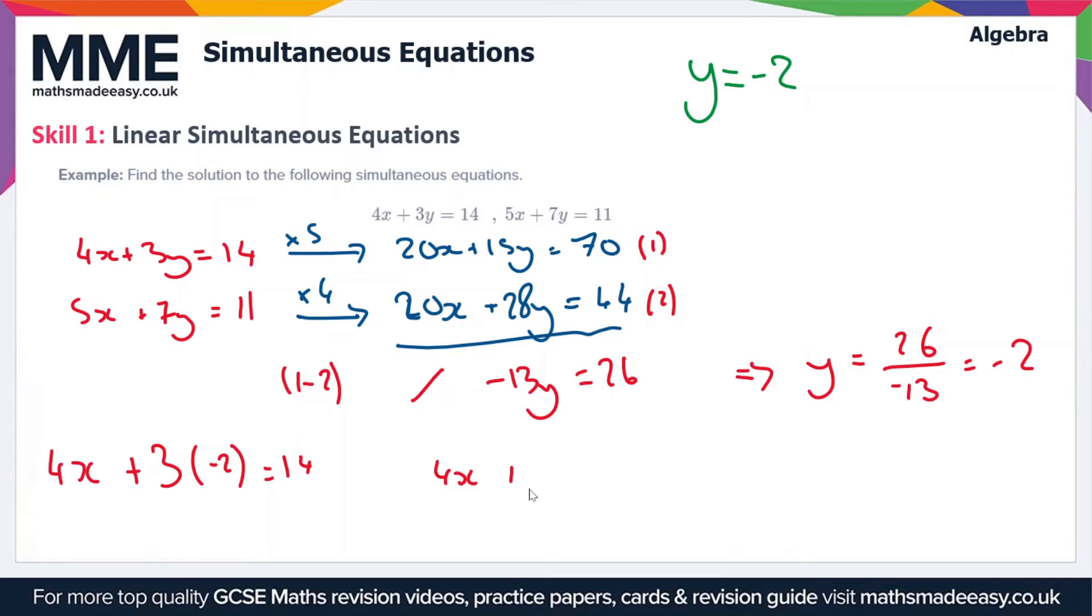Sorry, that should be 4x minus 6 equals 14. So that's just going from there to there. And then we add 6 to both sides. So we should get 4x equals 20. So x equals 20 over 4. Therefore, x equals 5. So our solutions are y equals minus 2 and x equals 5.